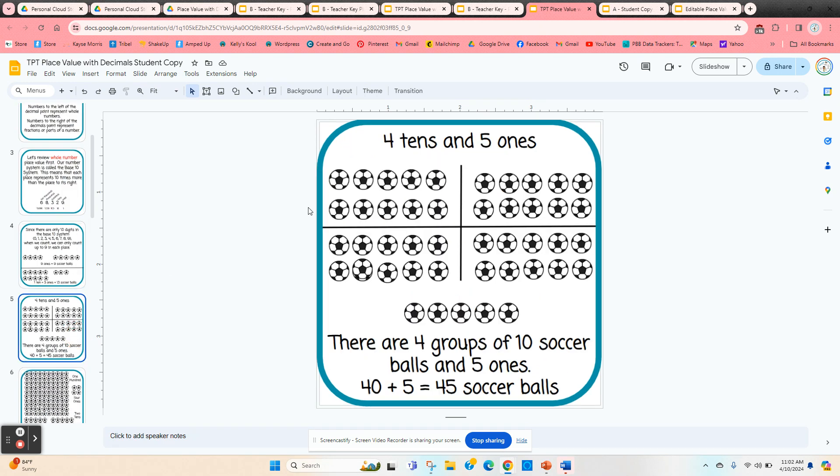And it shows some more visuals of 4 tens: 1, 2, 3, 4. And 5 ones gives us 45.